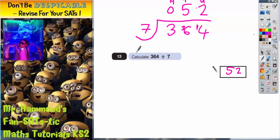You could have actually used the chunking method as well to do this. So again, you set it up in the same way, like this. And the chunking method is where you repeatedly subtract chunks of 7 from 364. Let's just talk about some chunks of 7.